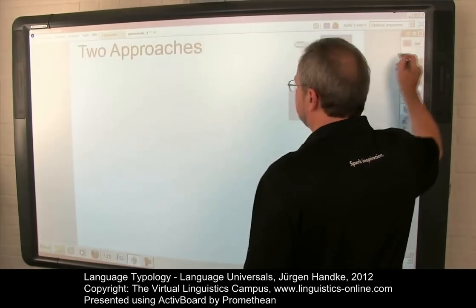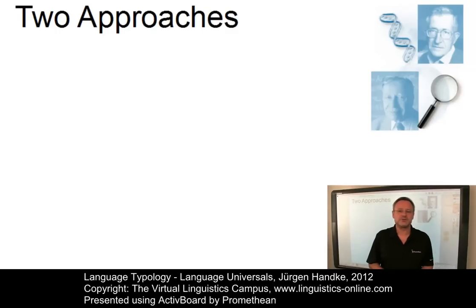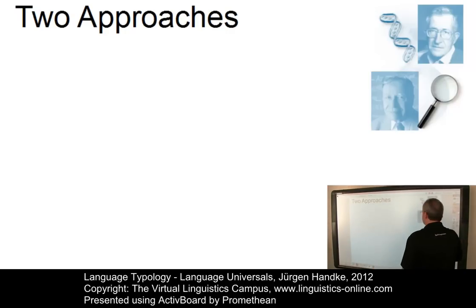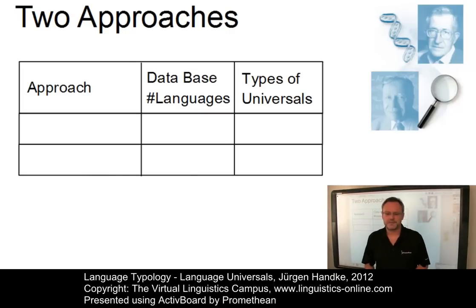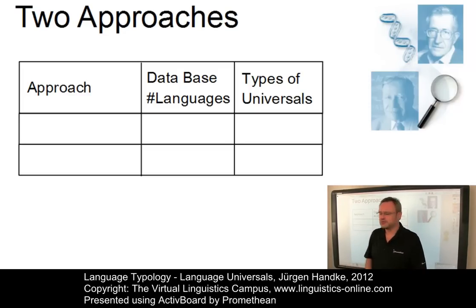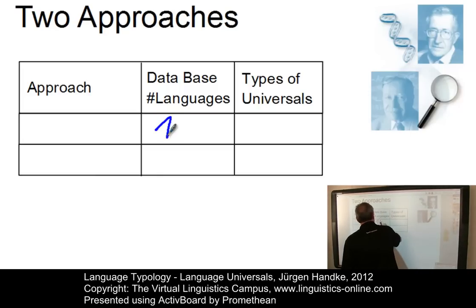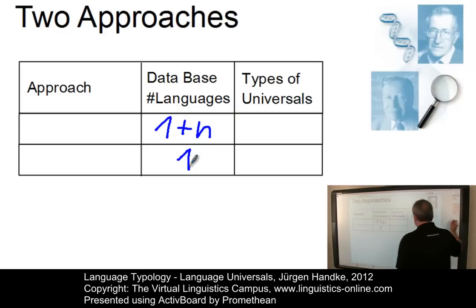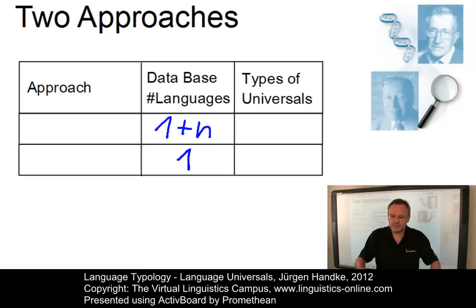Two major methodological approaches have been adopted in linguistics as far as language universals are concerned. They can be contrasted on the basis of two parameters. On the one hand, we can ask how many languages should be chosen for universal statements. We could look at a large number of languages — one plus n languages — or we could confine our statements to just one language, since all languages share the same core, one will suffice, would be the argument.